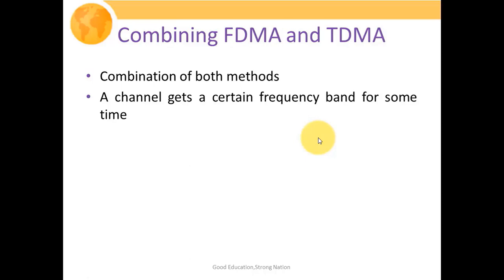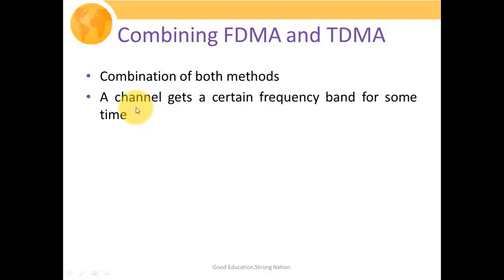Moving forward, we will study how we can enhance the capacity of a communication system by combining both FDMA and TDMA — called the hybrid multiple access technique. It is the combination of both methods: we divide frequency bands as in FDMA, and also divide time. The channel unit allocated to an individual user is a smaller time slot within a sub-frequency band.